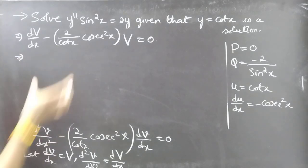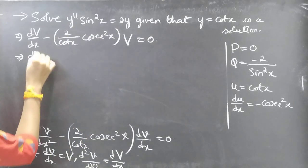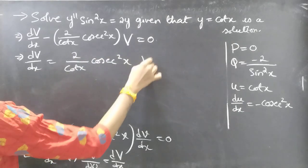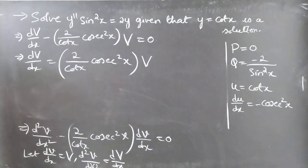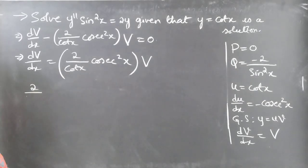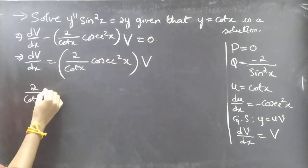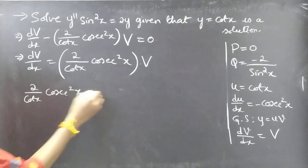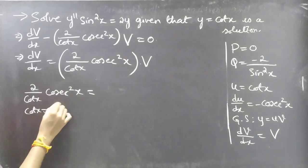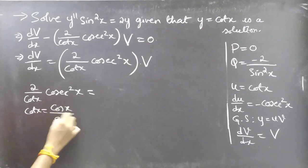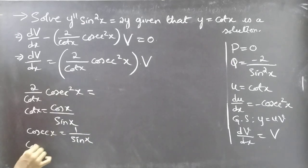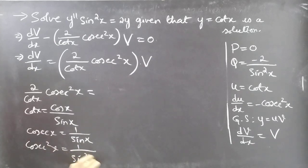Now we need to separate the variables. Taking the second term to the RHS gives dV/dx = (2/cot x)·cosec²x · V. We write this in terms of sine and cosine: cot x = cos x / sin x, cosec x = 1/sin x, so cosec²x = 1/sin²x.